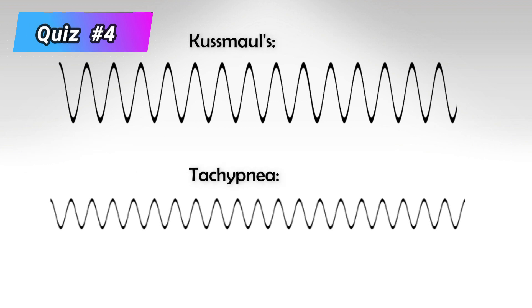Unlike tachypnea, which is shallow rapid breaths, Kussmaul's breathing pattern consists of high-amplitude, rapid breaths. This means the patient will intake as much air and exhale as much air as possible.